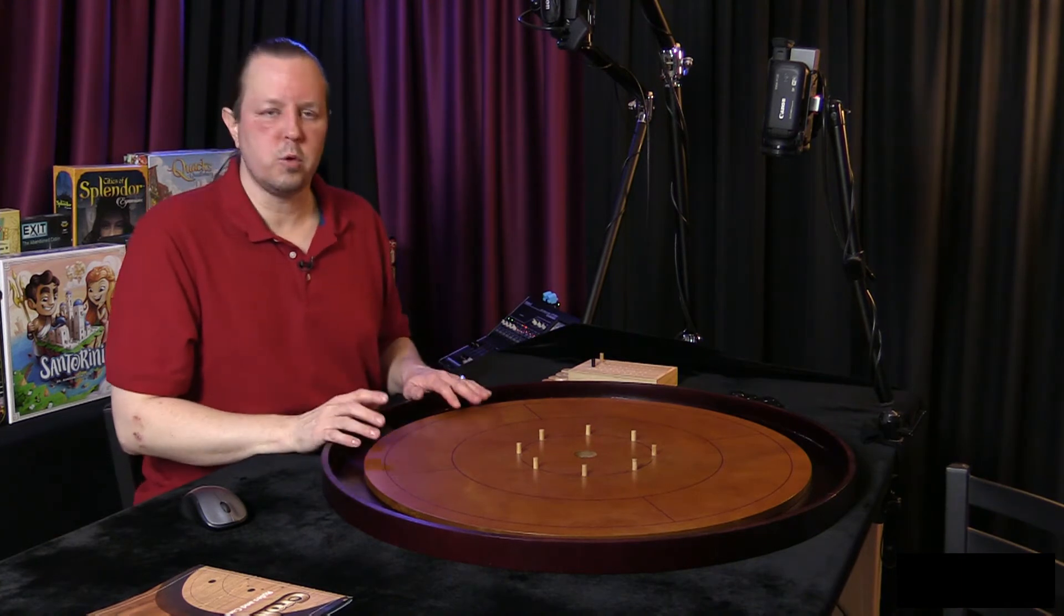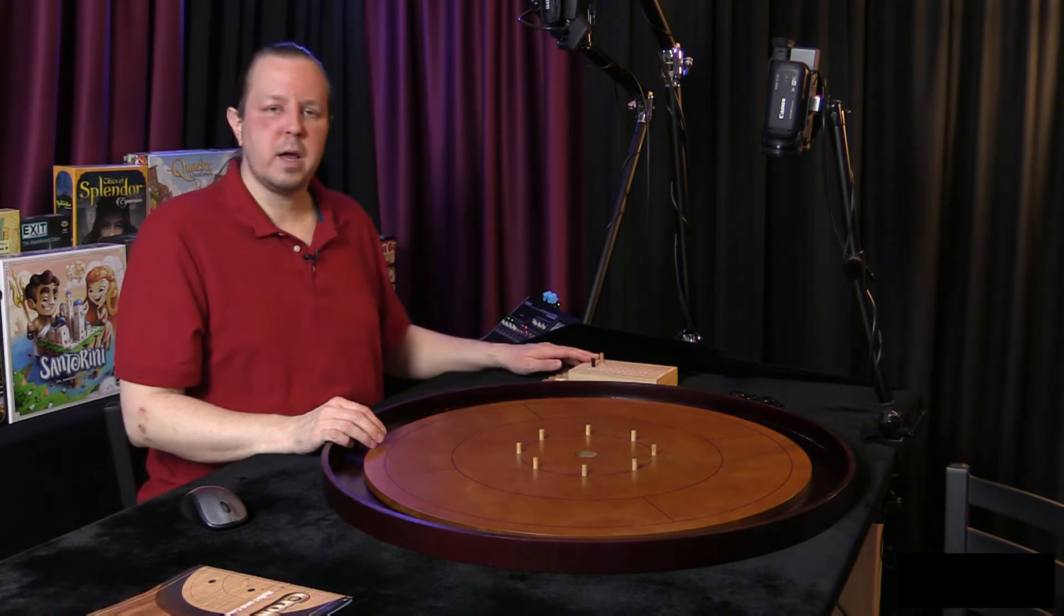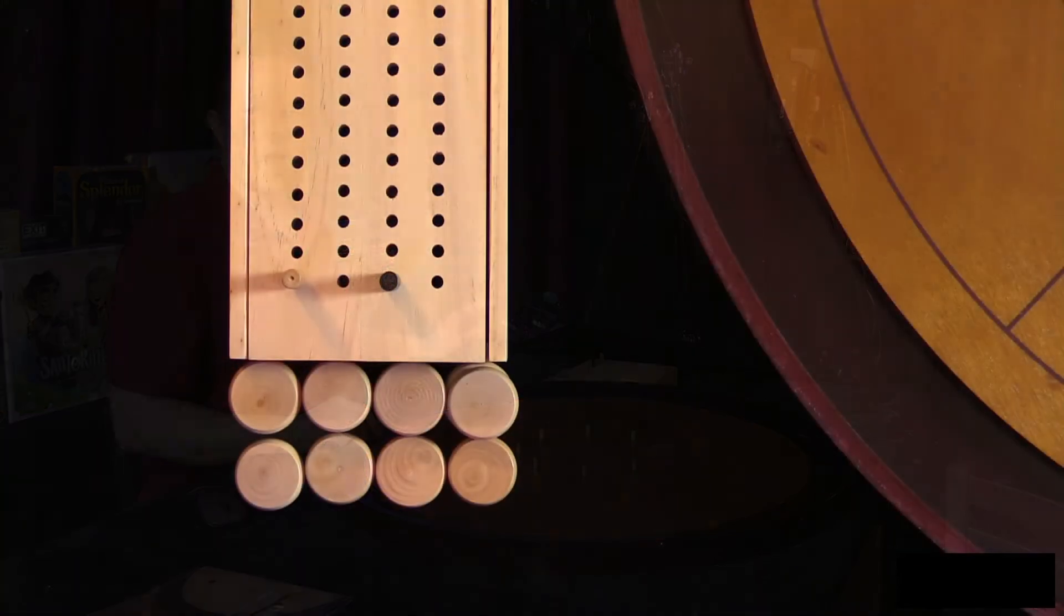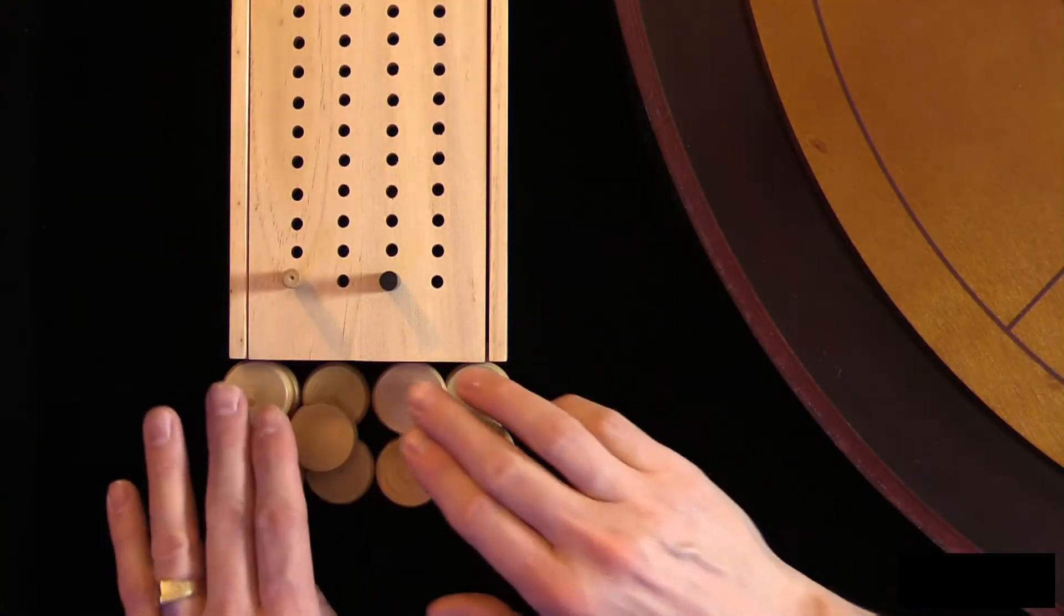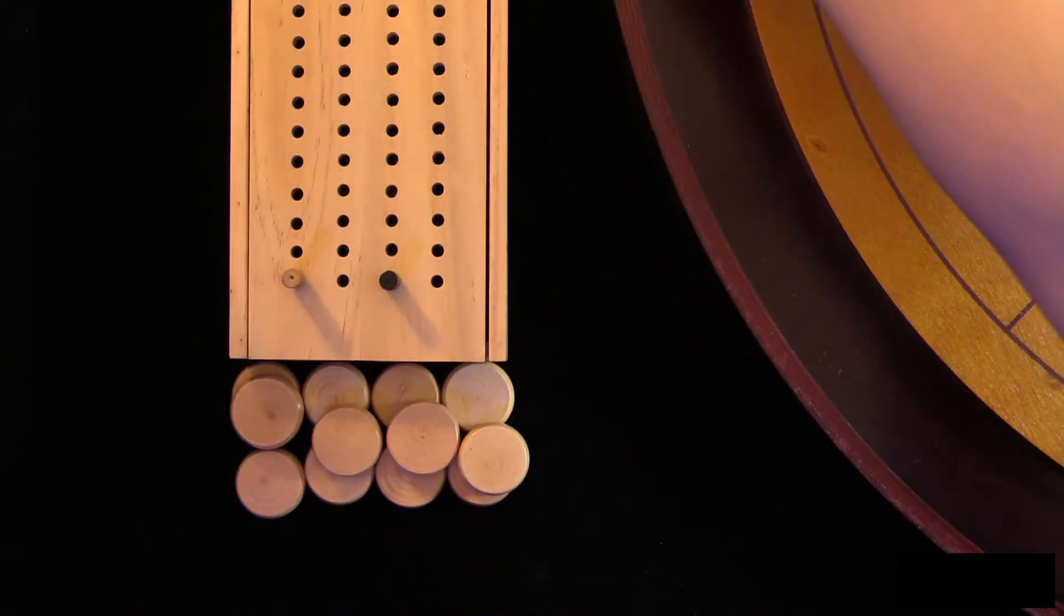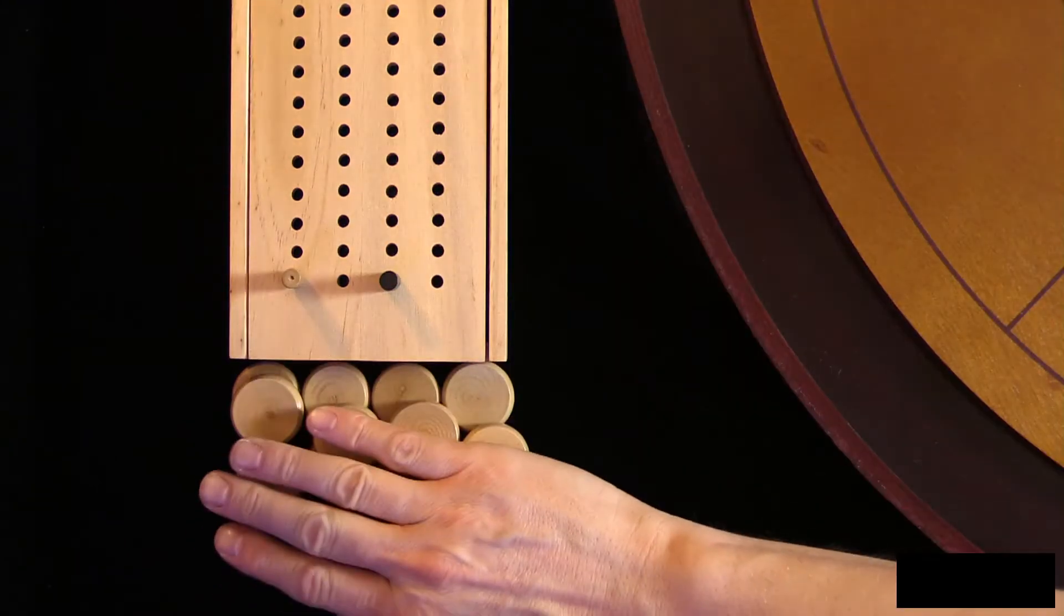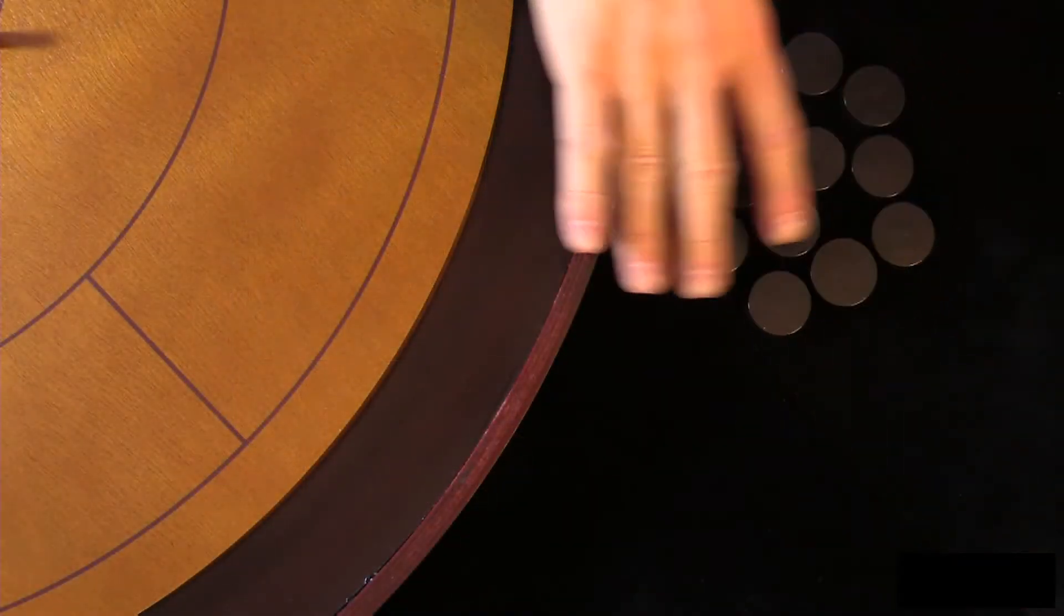So let's go over the rules real quick. If you're playing with two players you're going to start out with 12 discs each. So here is my 12 discs and here's the other player's 12 discs.